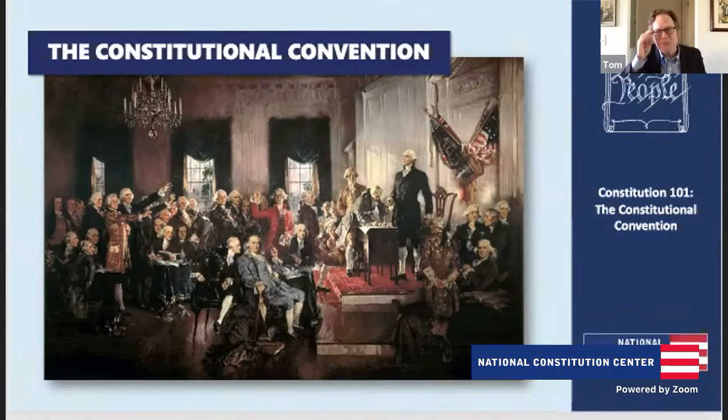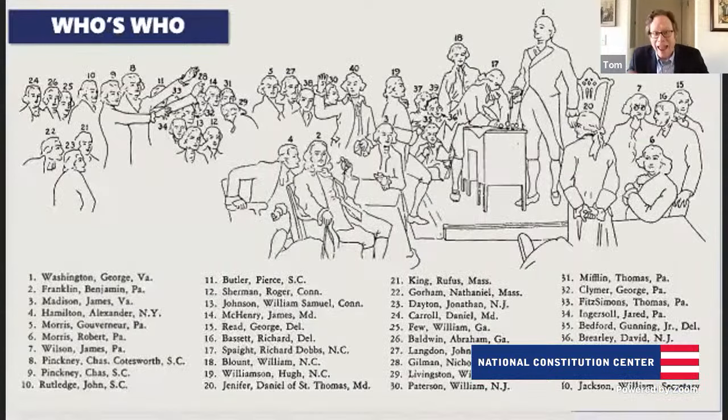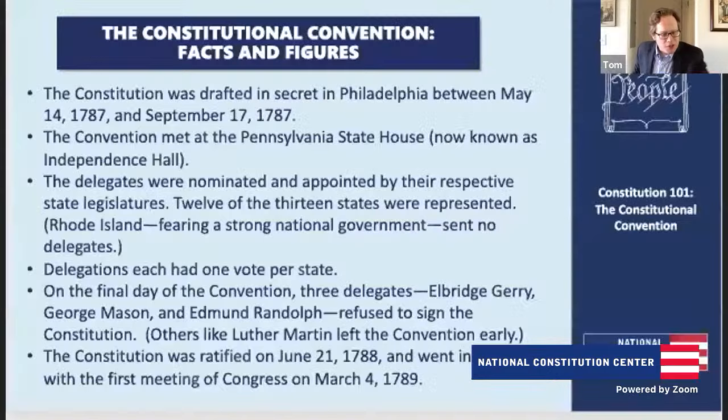A couple of other things to flag about the convention: the proceedings were in secret. They closed it up and made sure there weren't any leaks — partly to allow for candor in discussions. The idea was they were discussing big, difficult issues and wanted people to feel free to change their minds and be convinced by arguments. The convention runs from May until September 17th, 1787, in the Pennsylvania State House — now known as Independence Hall, right across from the National Constitution Center.